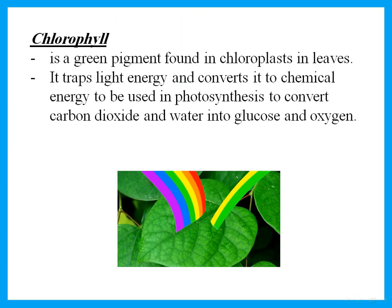Chlorophyll — in order to do photosynthesis, the leaf needs to have chlorophyll. Chlorophyll is a green pigment or a green colored substance found in chloroplasts. Leaves have chloroplasts, and chloroplasts contain chlorophyll. What is the function of chlorophyll? It traps light energy and converts it to chemical energy, and this is used in photosynthesis to convert carbon dioxide and water to glucose and oxygen.